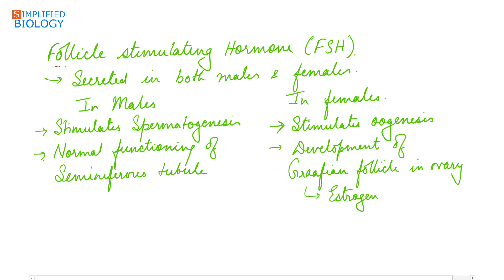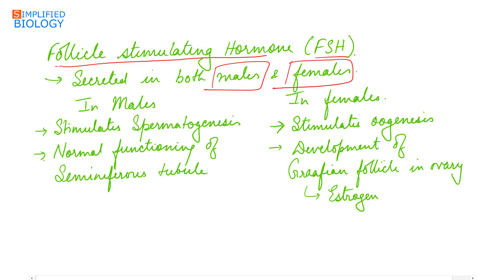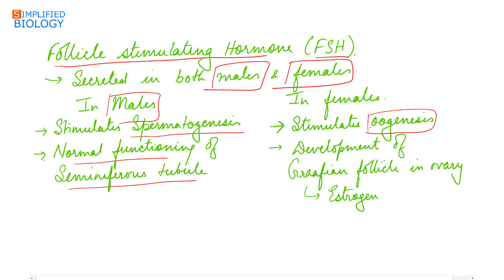Follicle stimulating hormone (FSH) is secreted in both males and females. In males, it stimulates spermatogenesis (formation of sperm) and is responsible for normal functioning of the seminiferous tubules. In females, it stimulates oogenesis (egg formation) and development of the Graafian follicle in the ovary, which secretes estrogen.